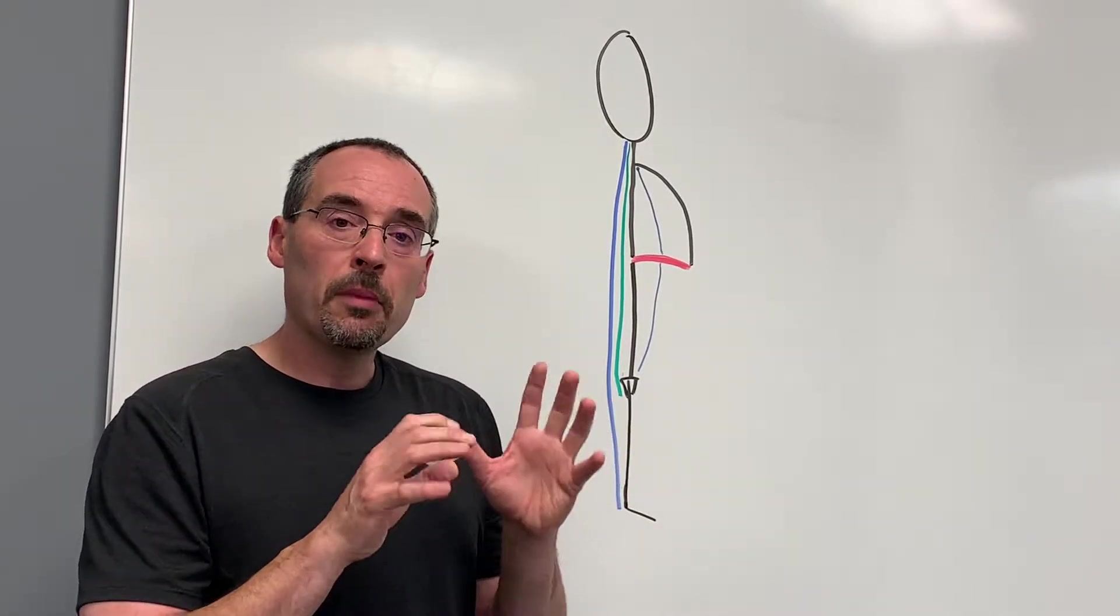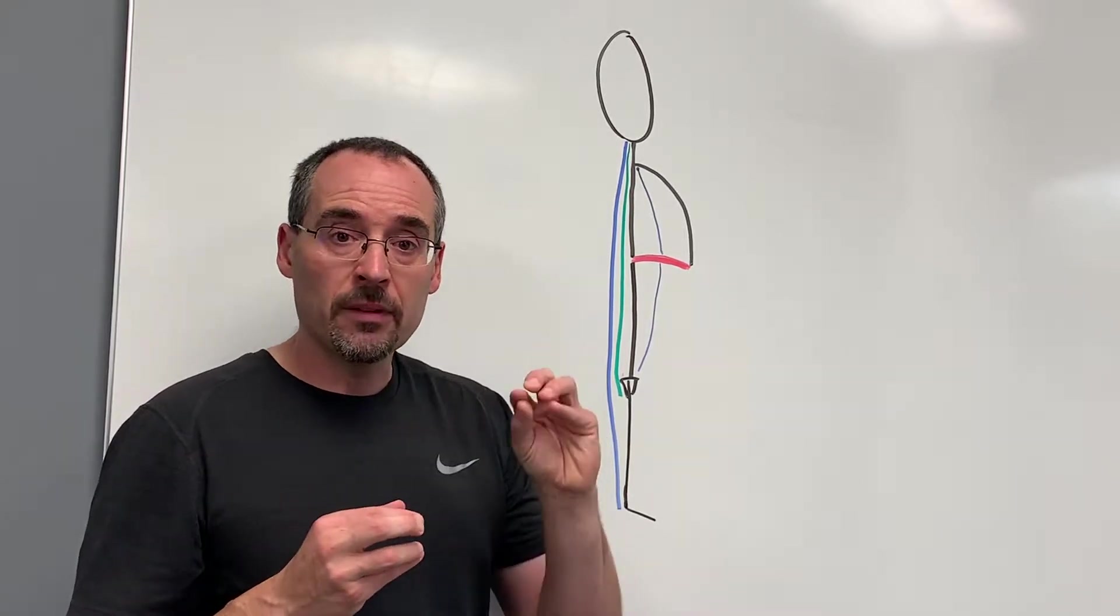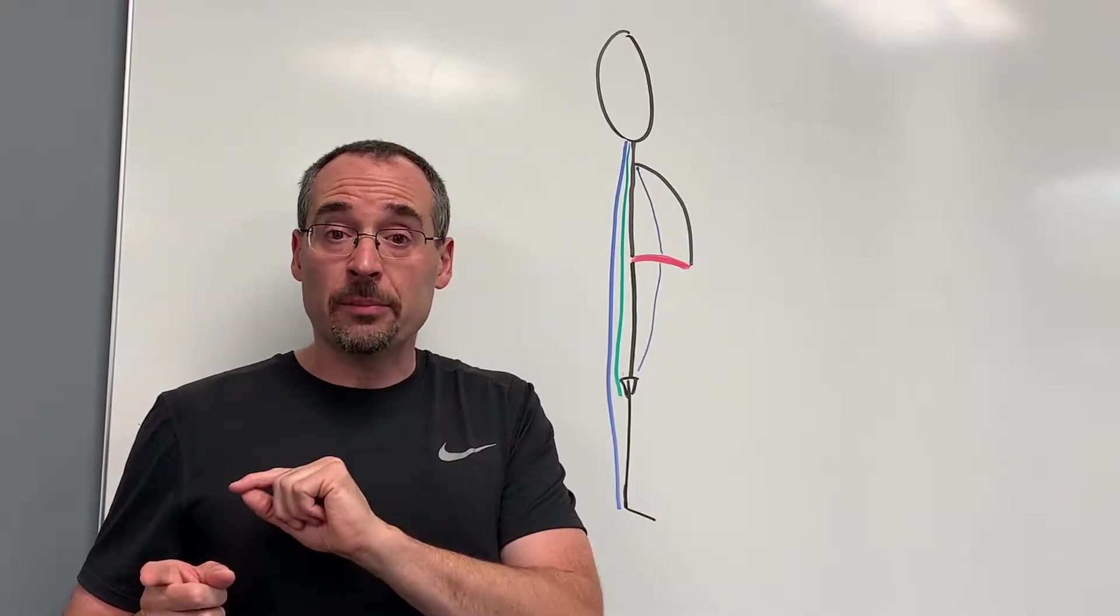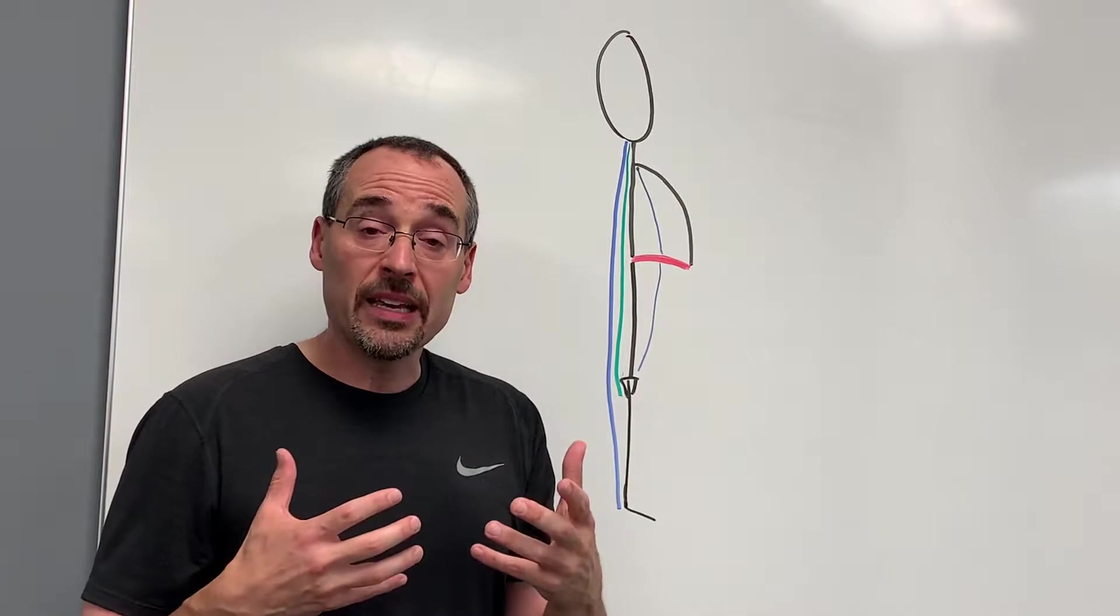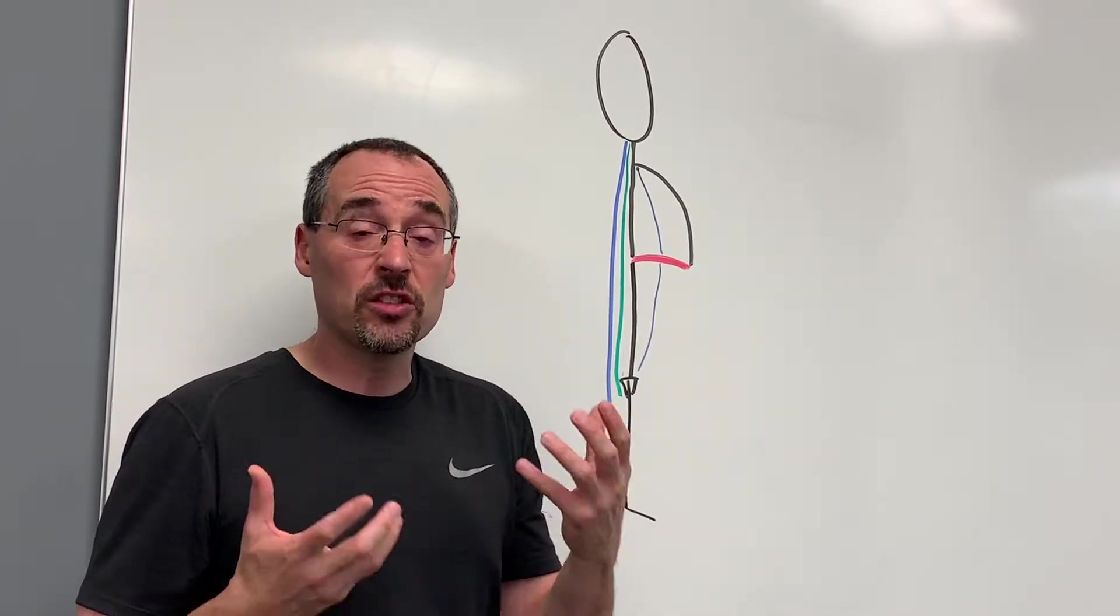The brain might find one problem in part of the kinetic chain, and it may then start to over-recruit another aspect of that same kinetic chain in order to compensate, to try to make that one particular kinetic chain as efficient as possible.